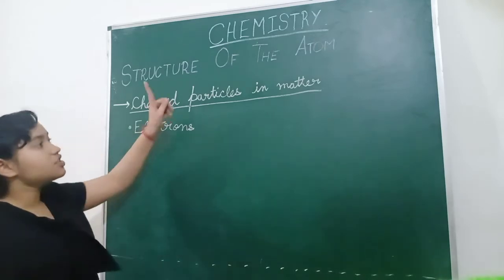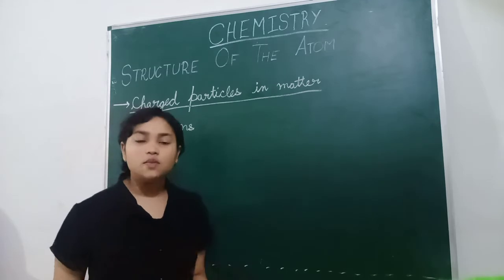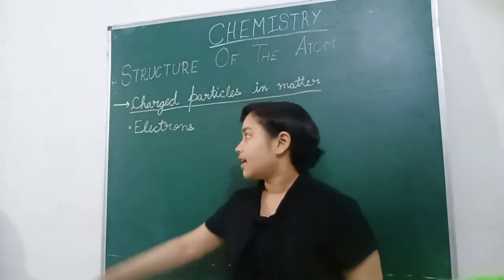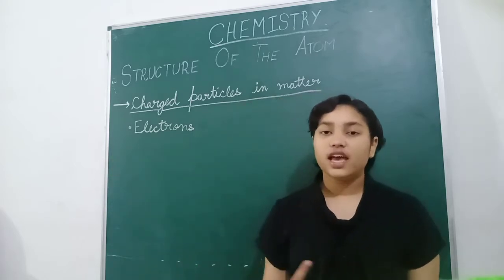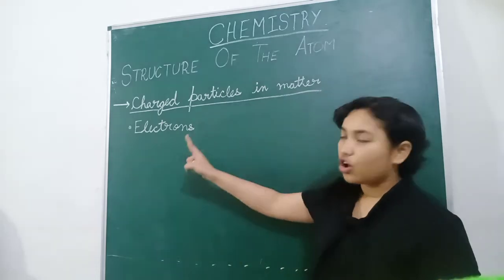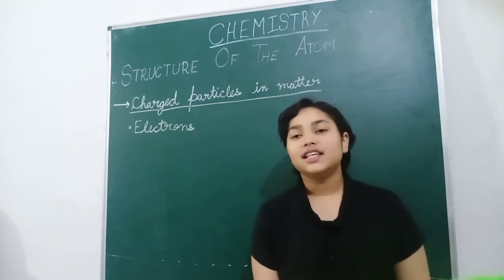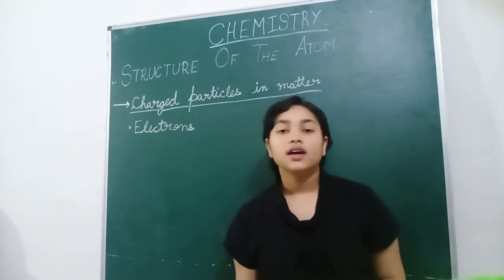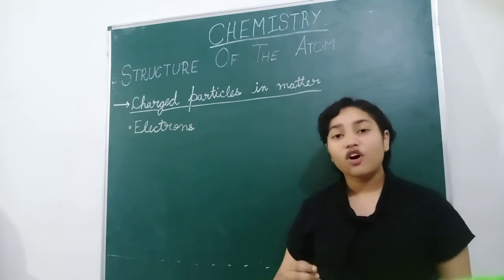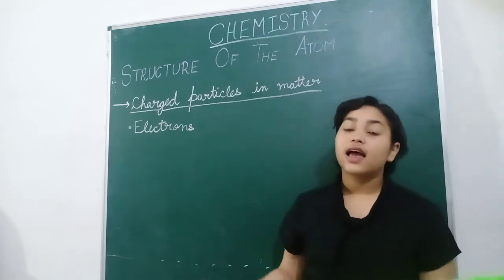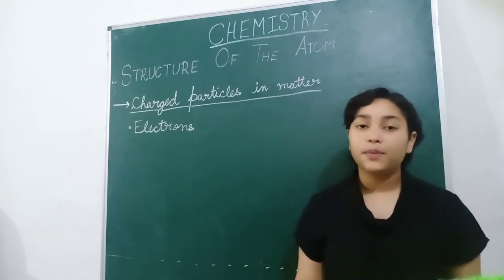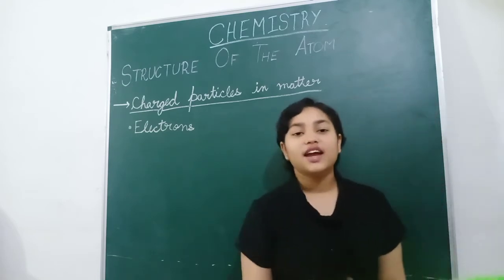Now let us discuss what are the charged particles in matter. They are electrons — they orbit around the shells around the nucleus of an atom, that's why they are also called charged particles. For example, if you rub your hair with a comb and then put some pieces of paper near it, it will attract them. Because the charged particles, which are electrons, are in motion — that's why they just stick up to paper pieces. This is an experiment you can do at home.